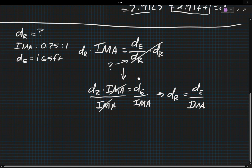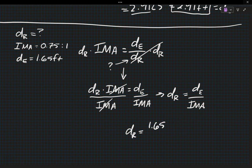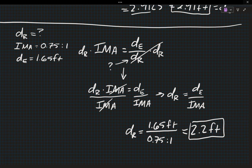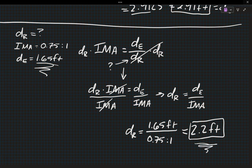So plugging in here, DE is 1.65 feet and our IMA is 0.75 to 1. By the way, when you are plugging an IMA or an AMA into the calculator, you do not plug in the ratio notation. It's just like a unit. You just leave it off. So I'm going to plug in 1.65 divided by 0.75, and I get 2.2 feet. Now, it is worth noting here that our effort distance, where we are applying the force ourselves, is 1.65 feet. And the distance to the resistance, or where our object or our load is that we're lifting, is more than that. And that's because we have less leverage on our object. That's why our mechanical advantage is 0.75 to 1.